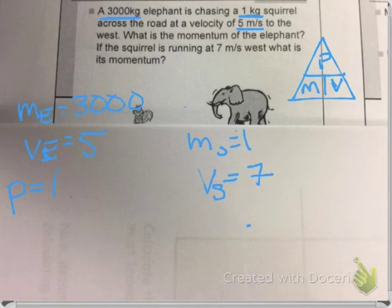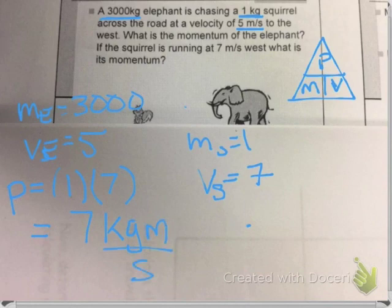It works the same way. I take my mass and my velocity and I multiply them together. The squirrel's mass was 1, and he was running away from the elephant at a velocity of 7 meters per second.